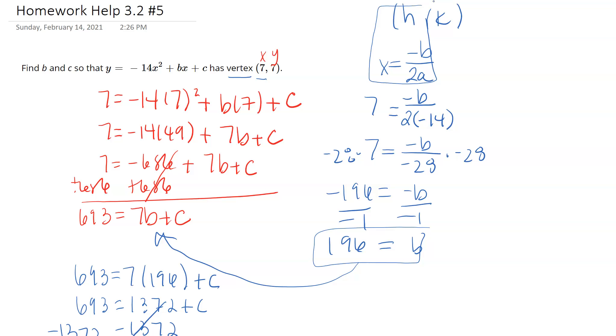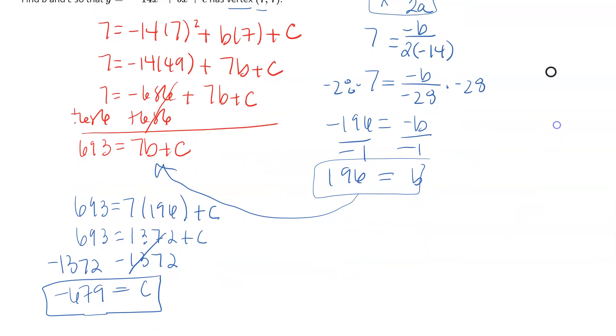Putting those two pieces together, this helps you see that b was 196 and c was negative 679. Hope this helps.